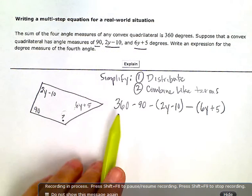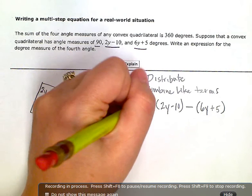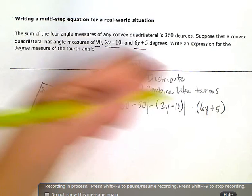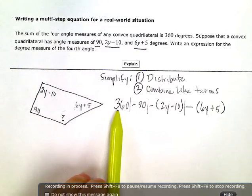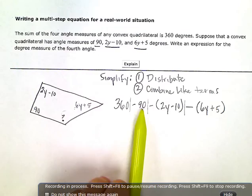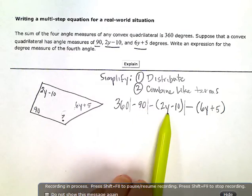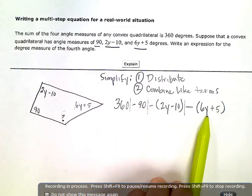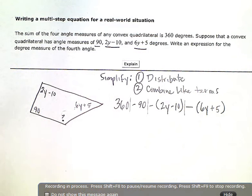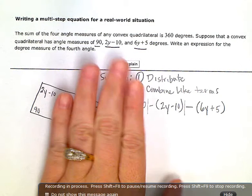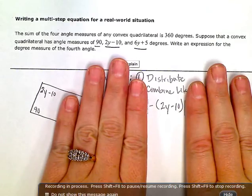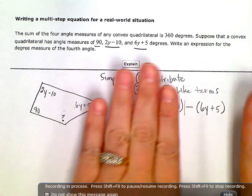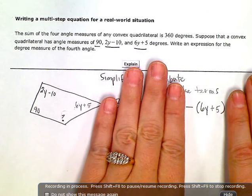So I'm going to draw lines here to separate my expression into sections. So I have a 360, then I'm subtracting the one angle, 90, then I'm subtracting the second angle, then I'm subtracting the third angle. So to distribute, I'm going to be dealing with just one of these little sections at a time. So I'm going to distribute just with this set of parentheses. And then I'm going to do that one. But I'm going to do them separately.